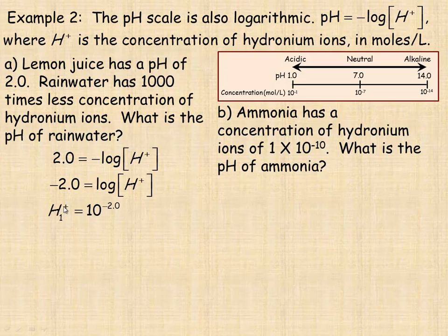So I'll call H₁⁺ the lemon juice. And so 10 to the power of negative 2, I'm going to rewrite that in scientific notation. It's 1 times 10 to the power of negative 2. Since these numbers can vary greatly and be really big or really small, I'll write them generally in scientific notation. And so we're told that the concentration for rainwater is 1,000 times less. So that's why we would take this concentration and divide it by 1,000.